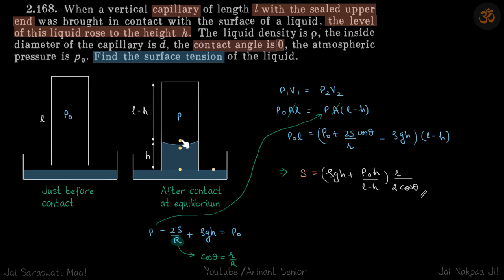Contact angle is also given to be theta. If this is p, then this pressure is p minus 2s by capital R. And this pressure will therefore be p minus 2s by R plus rho g h, which is equal to p0. So this is our first equation, and r can be written in terms of R.